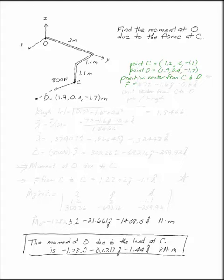The position vector is D minus C, which is 0.7i minus 1.6j minus 0.6k.